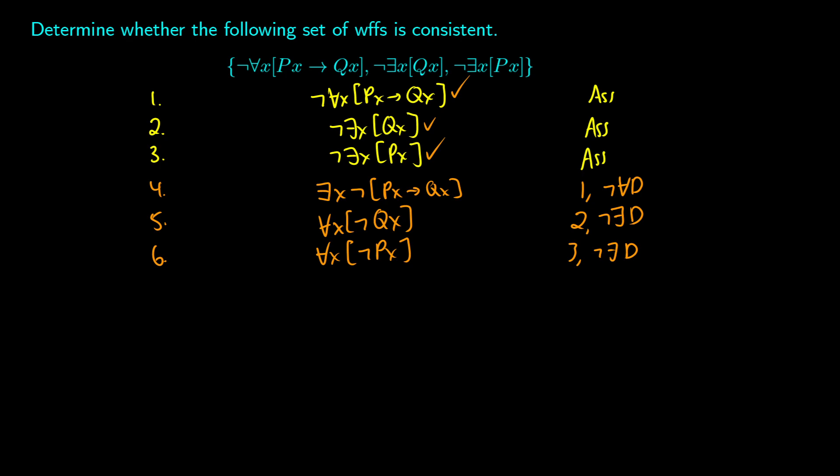An important piece of strategy: you should always do existential eliminations before universal eliminations when possible. Universals can reuse letters and constants that have already been introduced, so that's where we can get our contradictions. Existentials always require something new, so introduce the new thing first and then use the universals to make the contradictions.